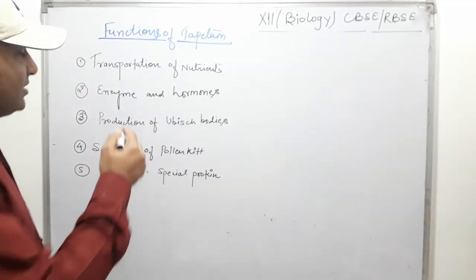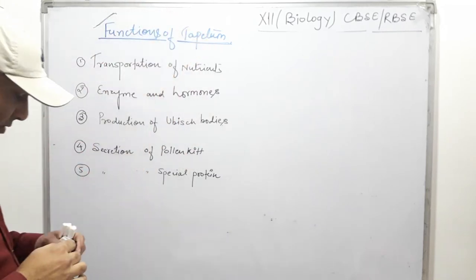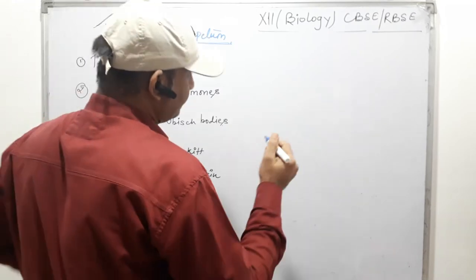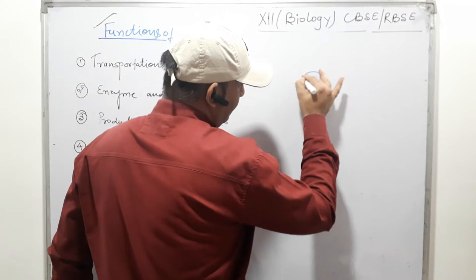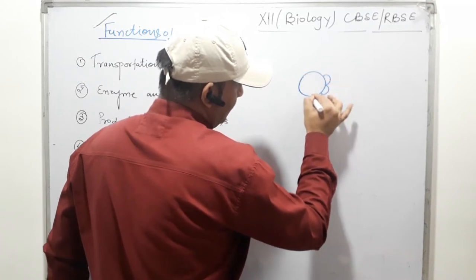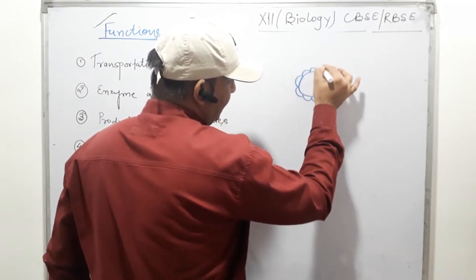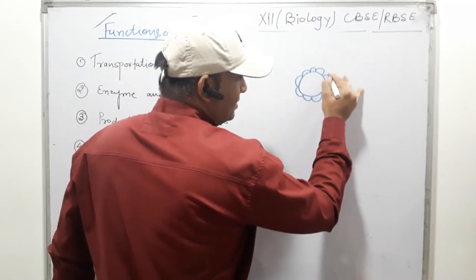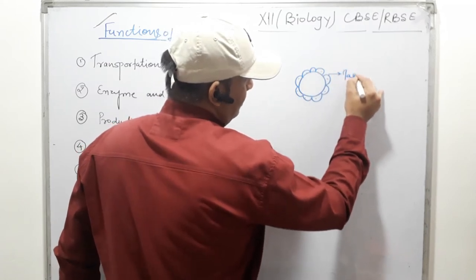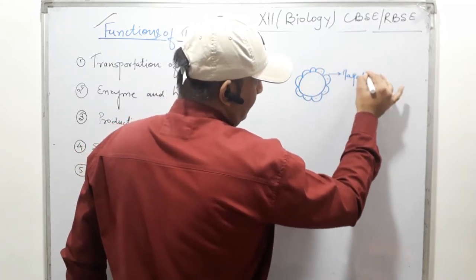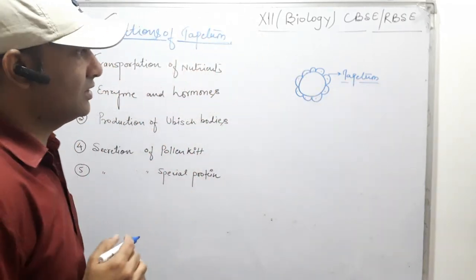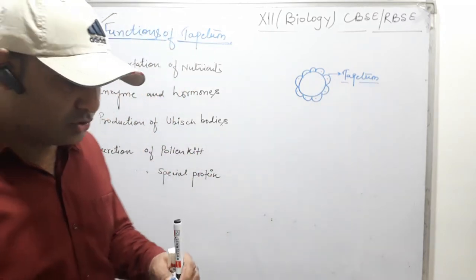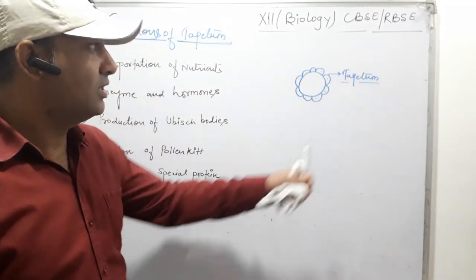Our next topic is the function of tapetum. In previous classes I have explained tapetum — it is the innermost membrane just outside the microspore mother cell or microspore tissue. This structure is called tapetum. It is a nutritive structure — it provides nutrition to the developing microspore and to the microspore mother cell. So tapetum is a nutritive layer, present in the anther just outside the microspore mother cell.